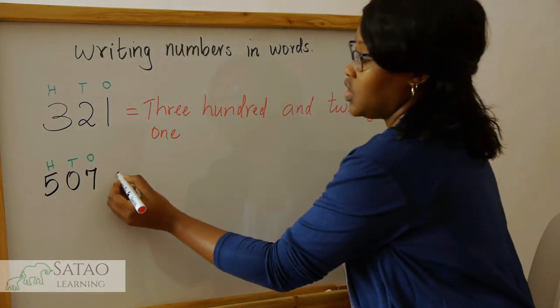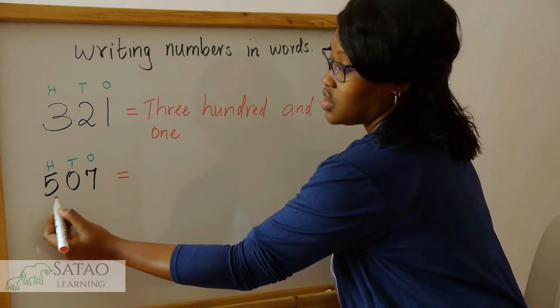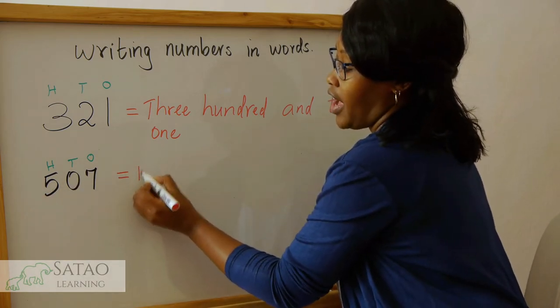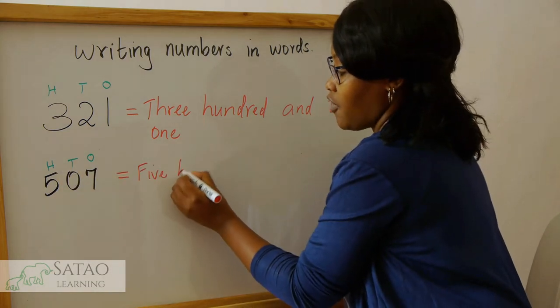So how do we write this number? Remember, we start from the left. We start reading numbers from the left. So that's 5, remember it's in the hundreds place, 500.